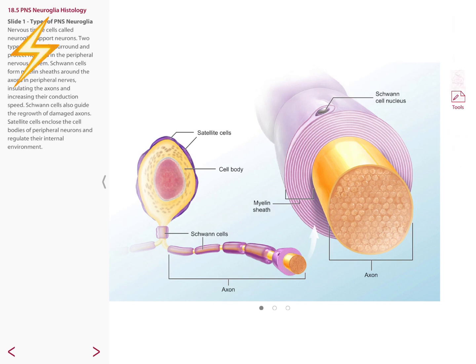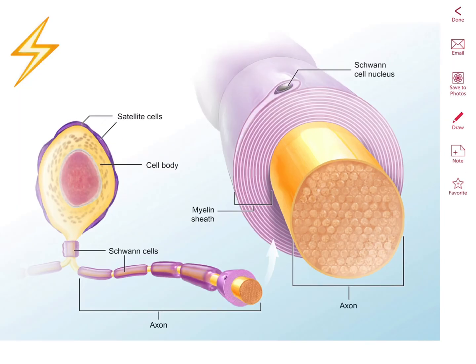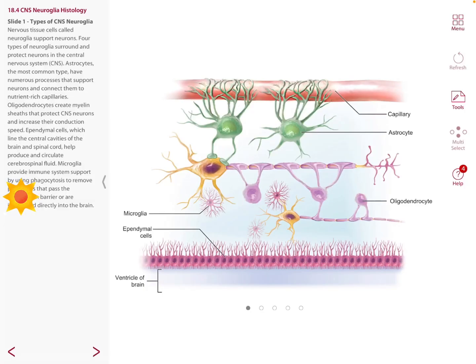Our neurons have a myelin sheath, which is made up of lipids and proteins and is produced by Schwann cells in the PNS or by oligodendrocytes in the CNS. The myelin sheath surrounds the axons of most neurons, increases the speed of nerve impulse conduction, and gives the white appearance seen in the white matter of our brain and spinal cord.